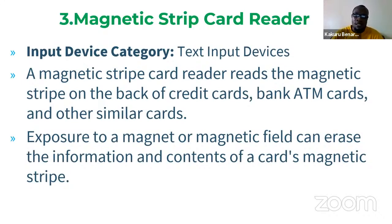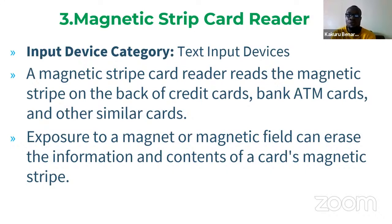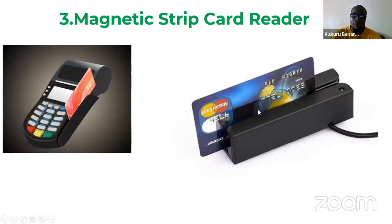The magnetic strip card reader is also an input device category. It reads the magnetic strip on the back of cards — credit cards, bank ATM cards, and other similar cards. National IDs also have that strip, and once the card is placed in the reader, it can read the information stored there.